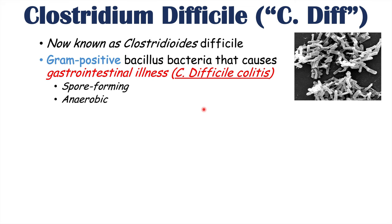There are several different strains of this bacteria. One important strain is known as the NAP1 strain. This NAP1 strain is a more virulent strain that causes a more severe clinical presentation, so it causes more severe illness in patients.